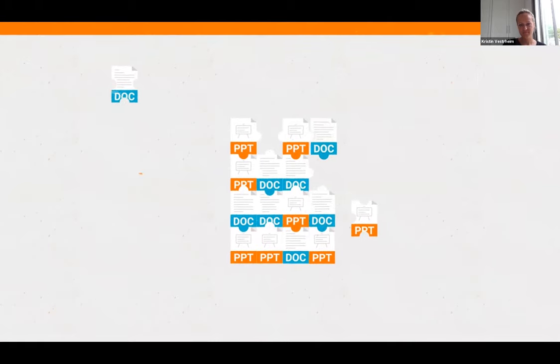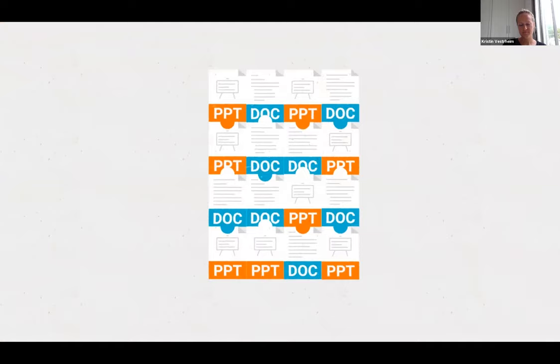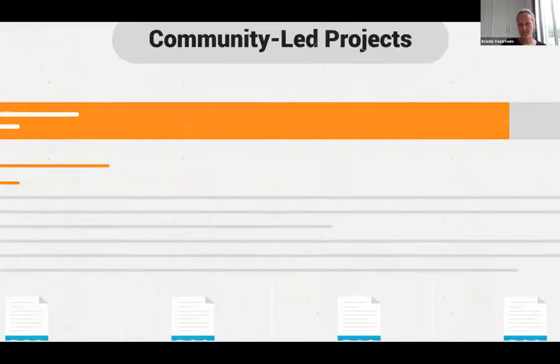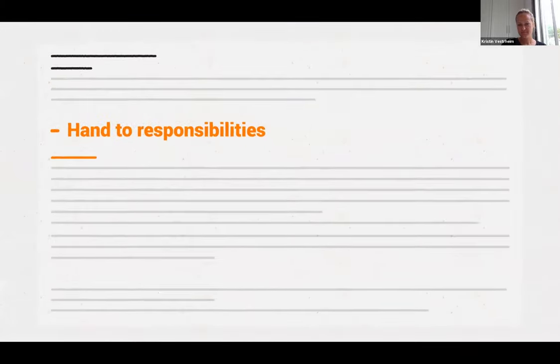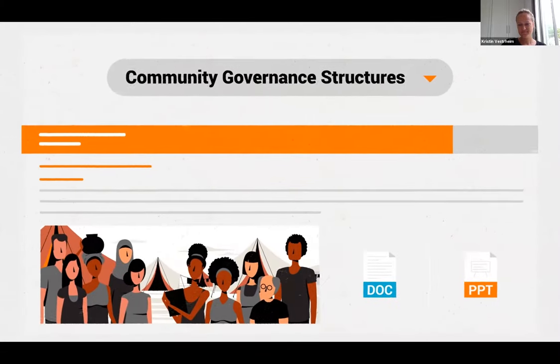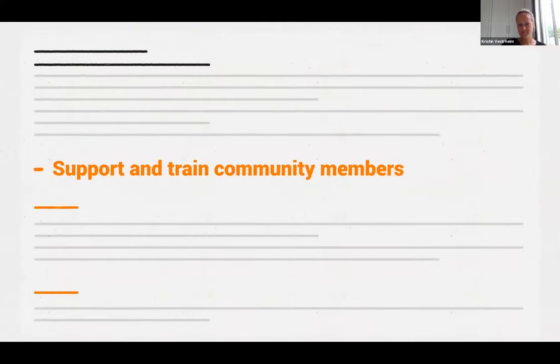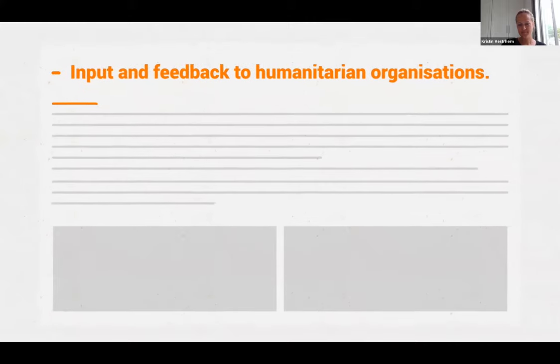Depending on your context, the phase of the project cycle, the objective, the type of assistance you provide, and the concerns of the displaced people, you might find different tools from different chapters more useful. The community government structures and women's coordination network chapters have extensive tools for supporting and training community members in providing input and feedback to humanitarian organizations. The tool on community structures, roles, and responsibilities was applied in 15 spontaneous settlements and shelters monitored by IOM, and combining these tools with focus groups helped strengthen the role of female leaders and empower women in general.